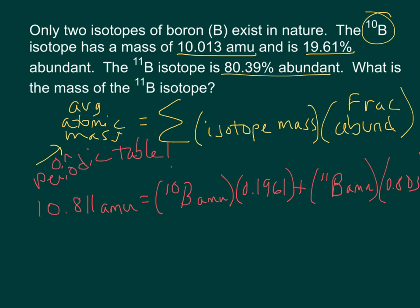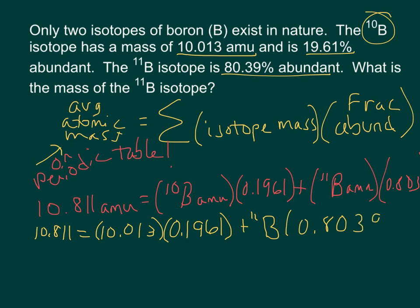So let's go ahead and fill in the numbers. 10.811 amu is equal to, let's fill in that first isotopic mass, which is 10.013, and we're going to multiply that by 0.1961. And then our next term, which is B-11, we don't have that, that's what we're solving for, and then 0.8039.